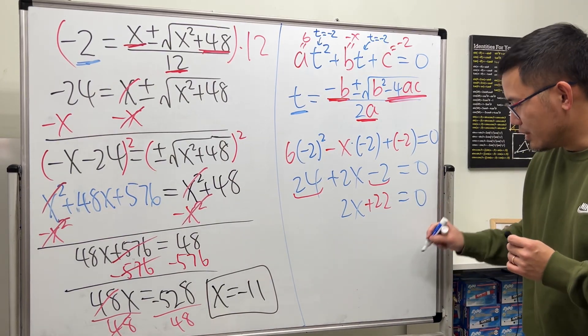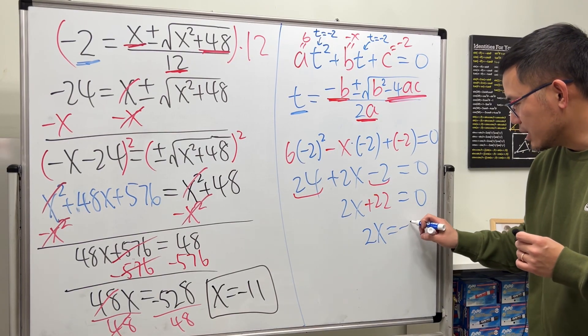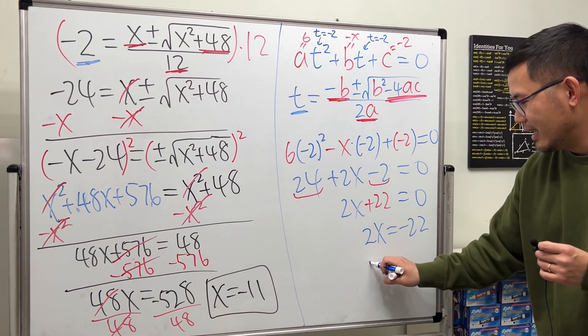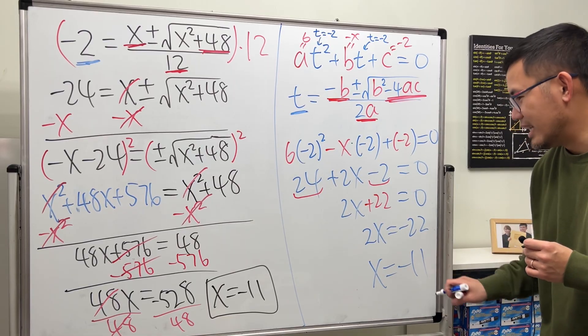Move the 22 to the other side, 2x equals negative 22. Divide the 2 on both sides, x equals negative 11.